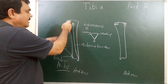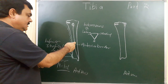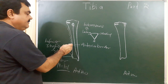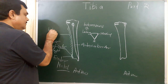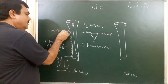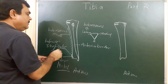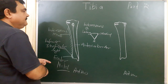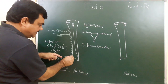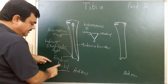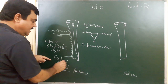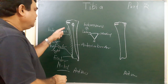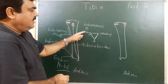So on the lateral border, from here to here, the interosseous membrane is attached. In the lower part, the inferior tibiofibular ligament is attached. At the anterior margin of the fibular notch, the anterior tibiofibular ligament, interosseous membrane, and capsular ligament are attached. So these structures are attached on the lateral or interosseous border.